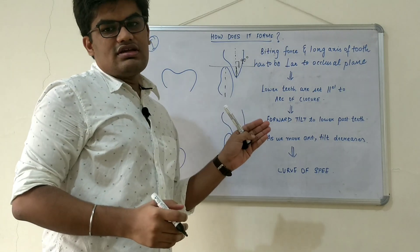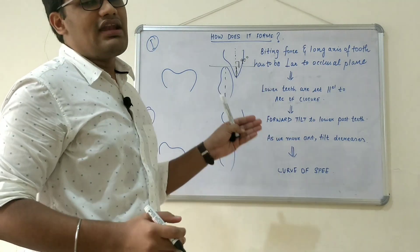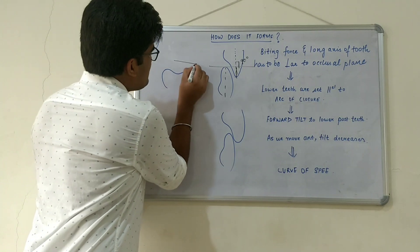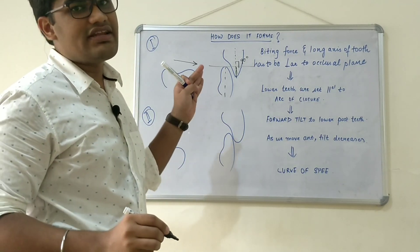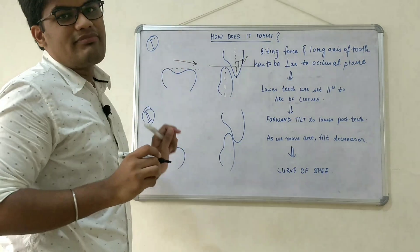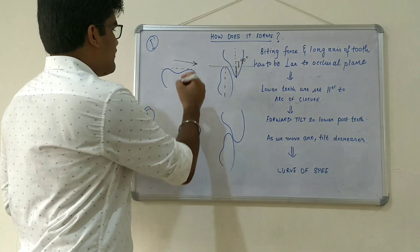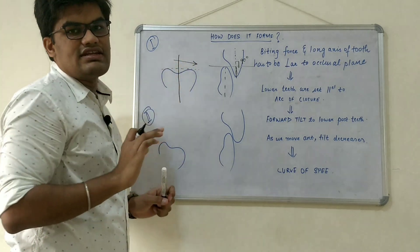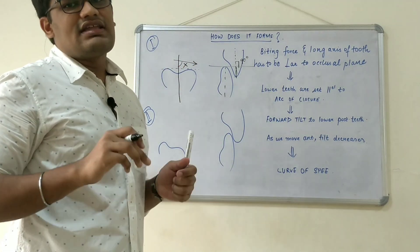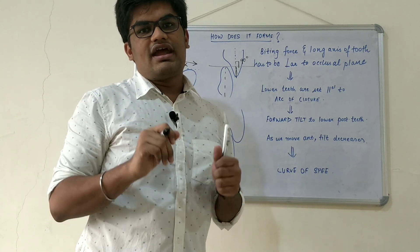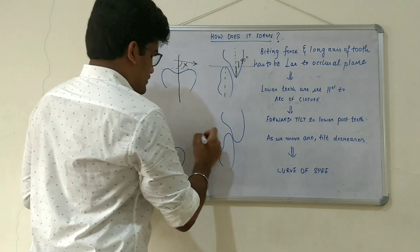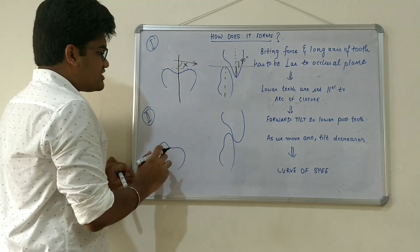As we move posteriorly, the arc of closure is not similar to that of the anterior teeth, and the direction of the biting force changes. In the case of posterior teeth, the biting force is always slightly mesially directed. As the forces are slightly mesially directed, the occlusal plane is not parallel to the biting force. When we draw the long axis of the tooth, we want a 90-degree angle, but instead only an acute angle forms. This means forces will not traverse along the long axis and will directly harm the periodontium.